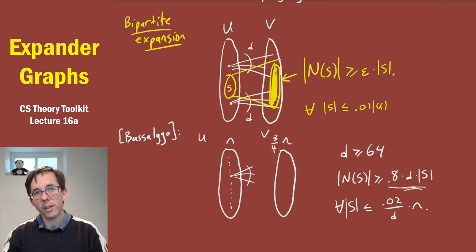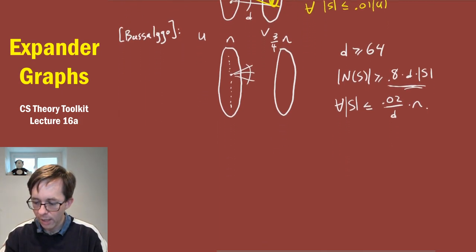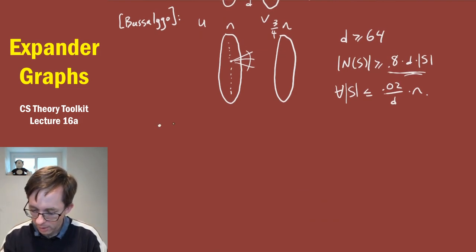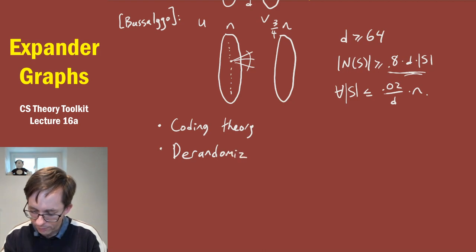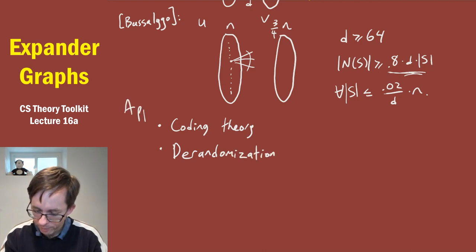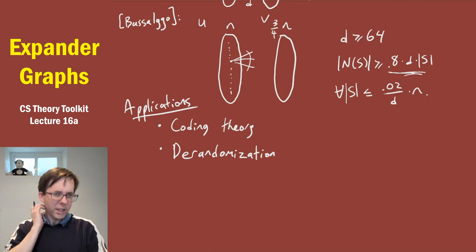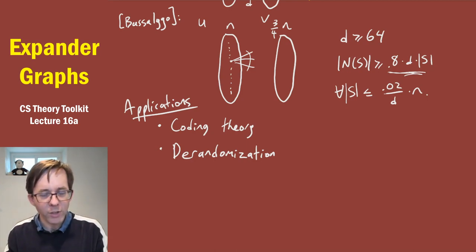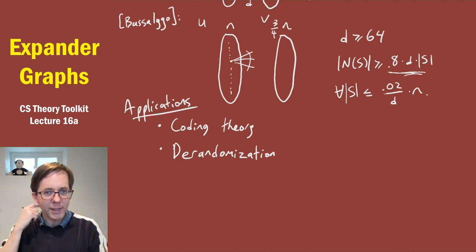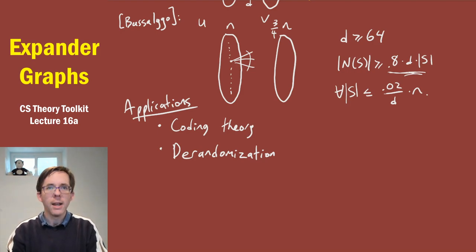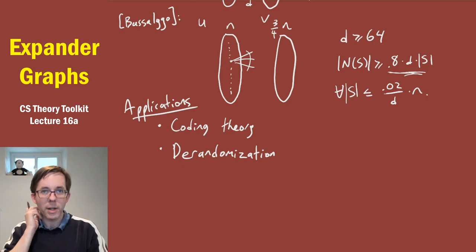This is the kind of bipartite expander graph that I'm going to show can be used to get two cool applications: one in coding theory, and one in derandomization. For both applications, Bosiligo's result that a random graph has these properties is not good enough. Particularly for derandomization, by definition you don't want to do anything randomized. And for efficiency and practicality in coding theory, you also don't want random codes — you want explicit codes.